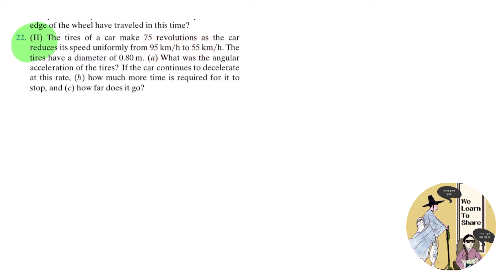The tires have a diameter of 0.80 meters. Because all of the time you're going to use the radius, not the diameter, it is better if you write that the radius would be half of the diameter, which is 0.40 meters. We're going to figure out first Part A: what was the angular acceleration of the tire.